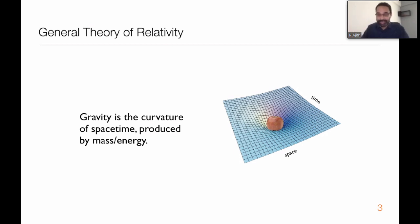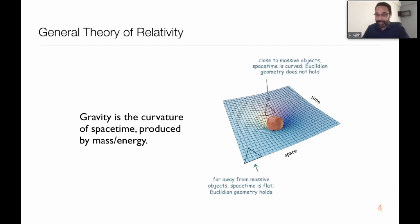It's very hard to imagine this object called space-time. It has four dimensions - three dimensions of space and the fourth dimension is time. It is harder to imagine the curvature of space-time, but the interesting thing is that one could make local measurements to infer the curvature of space-time.